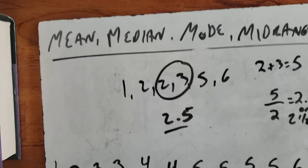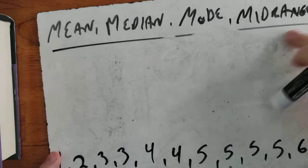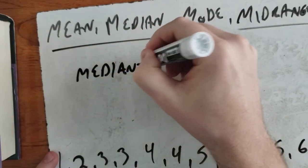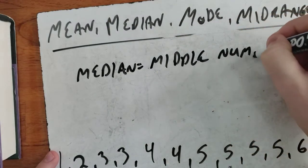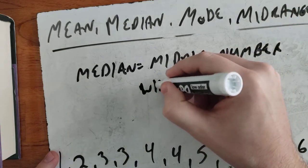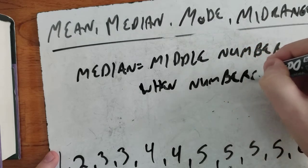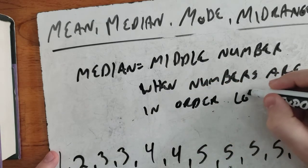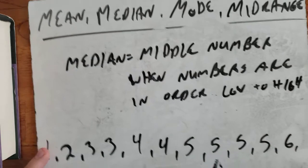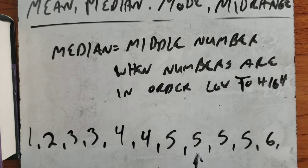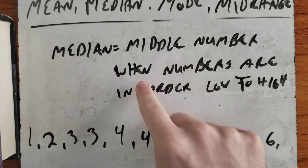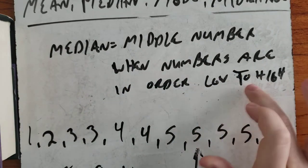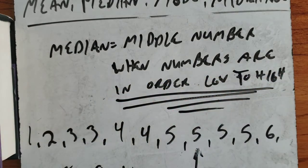Remember, for the median the numbers have to be in order. Median is the middle number when numbers are in order from low to high. That's a very important part — the numbers must be in order first. That's critical for finding the median.